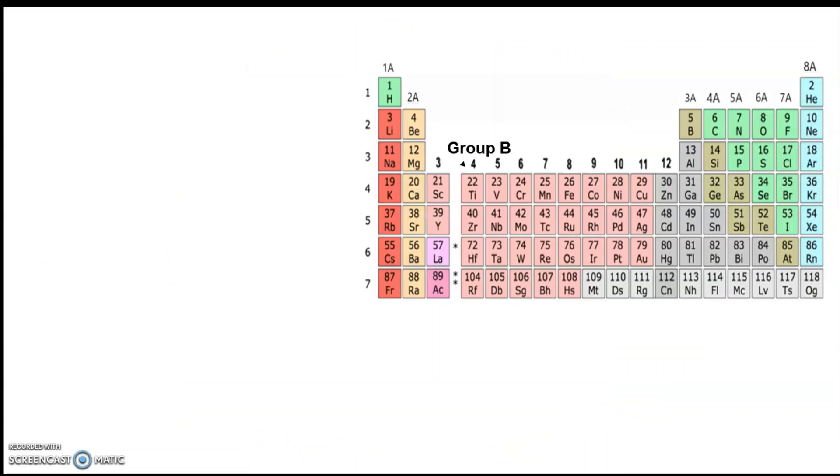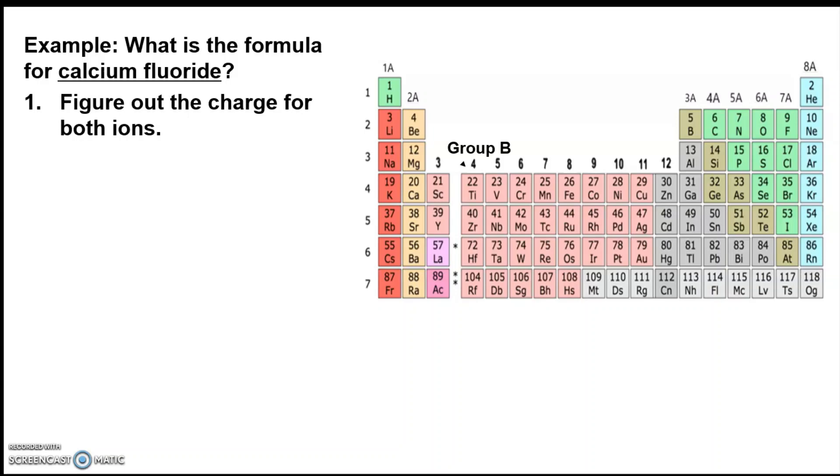All right. So we're actually ready to look at doing our first problem with this type of question you might get on a test would be something like, what is the formula for calcium fluoride? Well, I've got just a few steps here, three steps, only two of which you use very much. The first is figure out the charge for both ions. Well, calcium is right there. And then fluorine is right over here. And calcium is going to try to become like argon. And when it does, the calcium loses two electrons to be like argon. It develops a plus two charge.